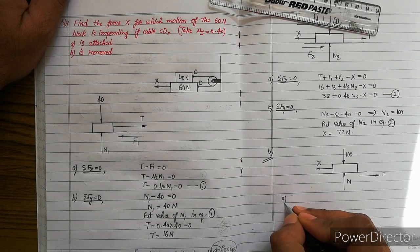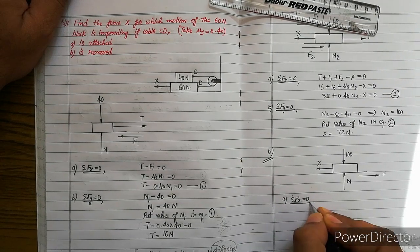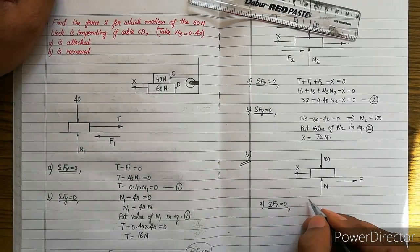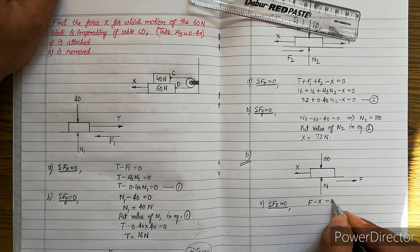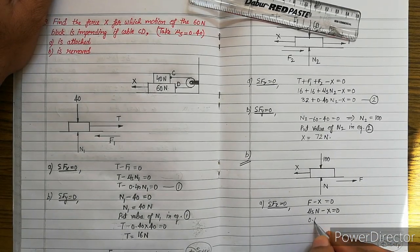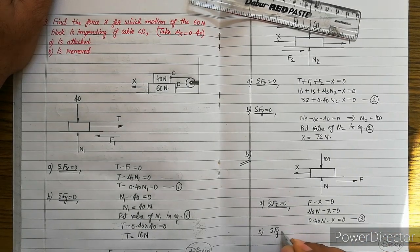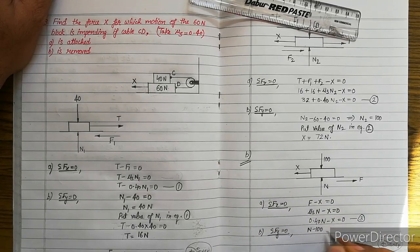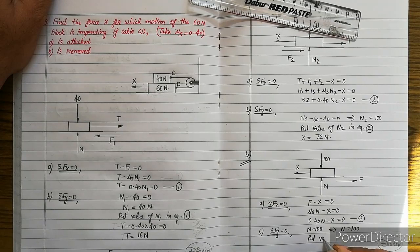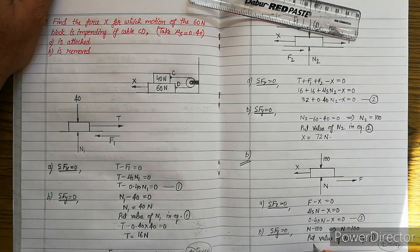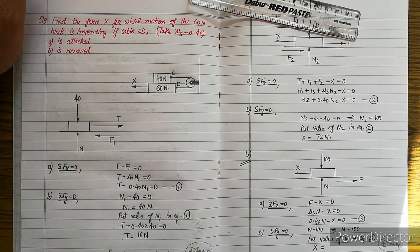Applying summation Fx = 0: F − X = 0, or μs·N − X = 0, giving 0.40·N − X = 0. Applying summation Fy = 0: N − 100 = 0, so N = 100N. Substituting into the first equation: X = 0.40 × 100 = 40N. So the value of X for part B is 40N.